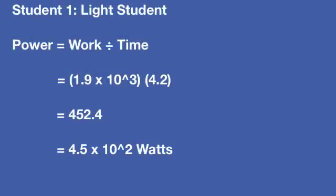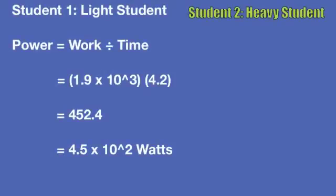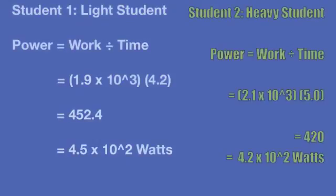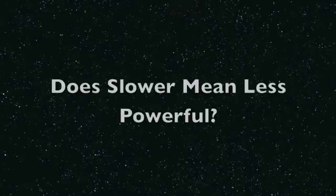For student one, our light student, we use the equation power equals work divided by time. We have the work from the previous equation and our average time. Plugging those in, we get 4.5 times 10 to the 2 watts as the power for our light student. Doing the same for our heavy student, we get 4.2 times 10 to the 2 watts.